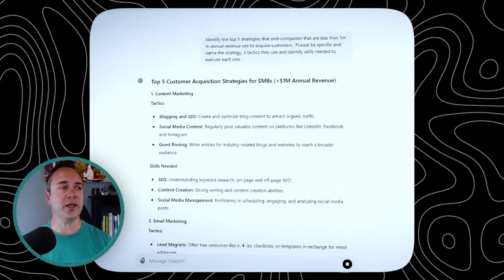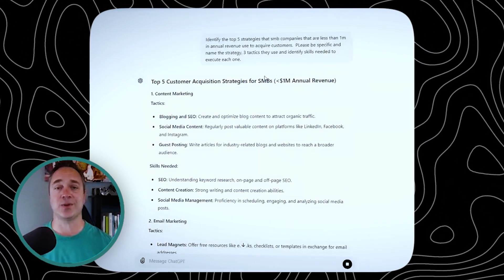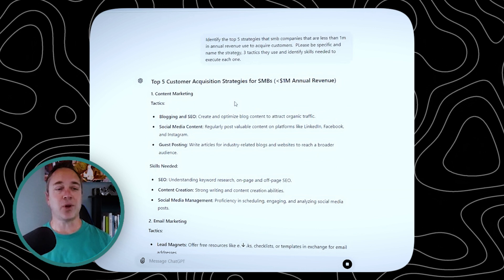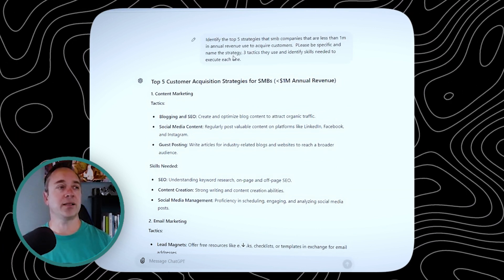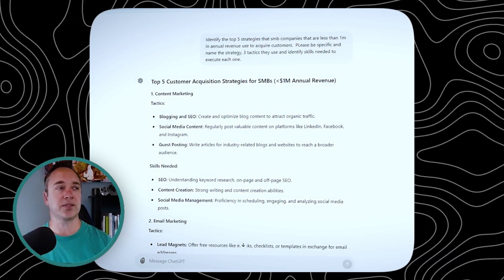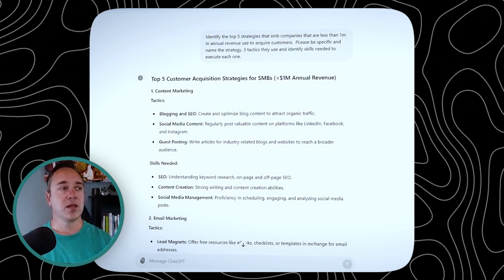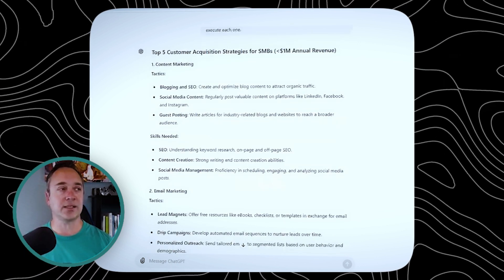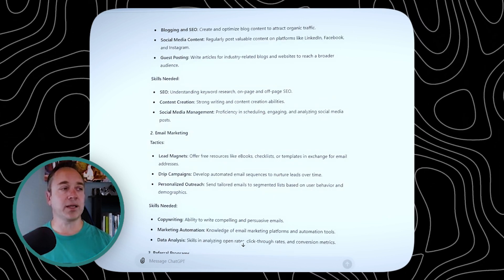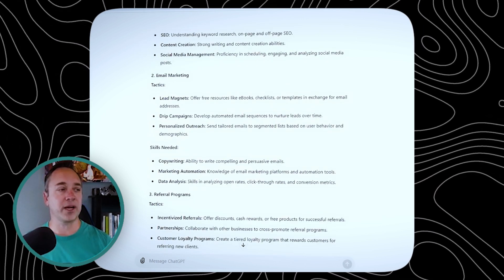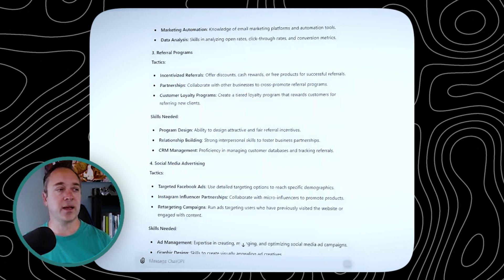Pretty good comprehensive output. This prompt didn't suck as much as the last one — a little bit more specific. I said: name the strategy, three tactics they can use, and identify the skills needed for each one. Now the awesome thing is this next area is really simple. So we got: content marketing, email marketing, referral programs, social media, and networking events.